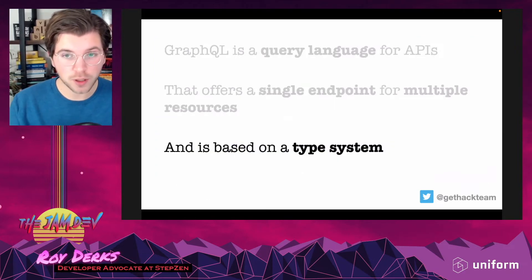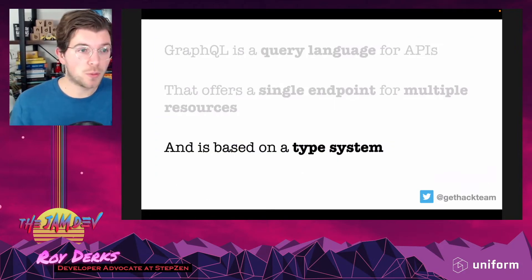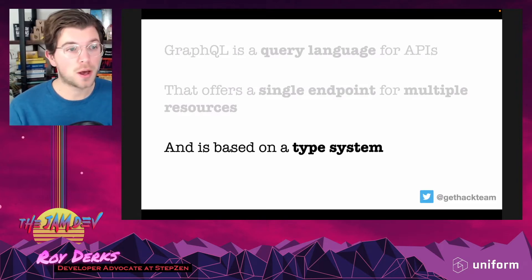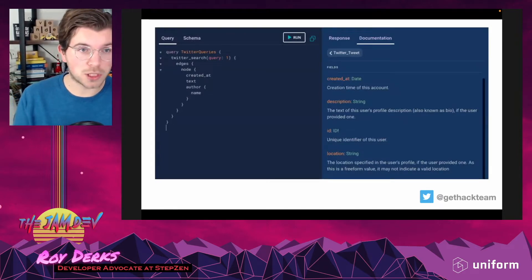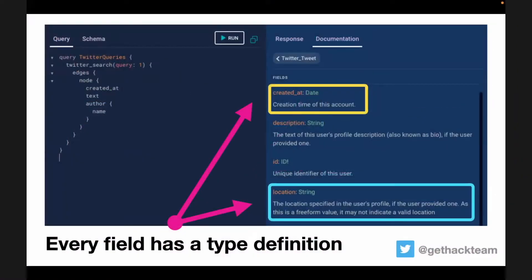The final important thing about GraphQL is that it's based on a type system. If you're using TypeScript, GraphQL has a similar type system — but it's GraphQL's own schema design language. Every field has a type definition: for example, a field called created_at has the shape of a date, and location has the type of a string. This type system, comparable to TypeScript, is a very powerful specific of GraphQL.